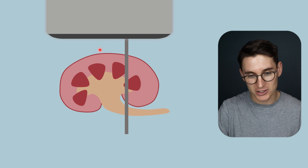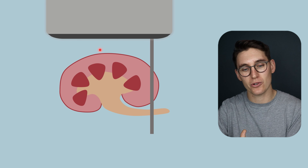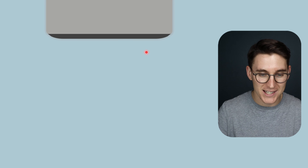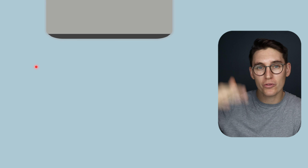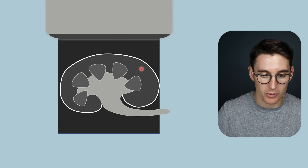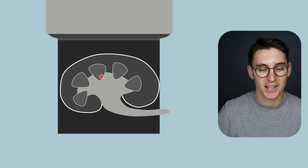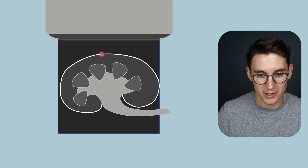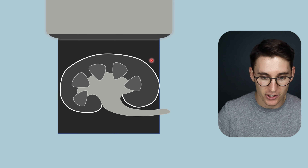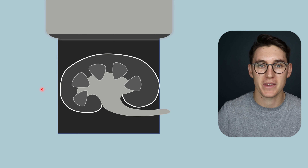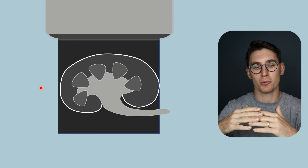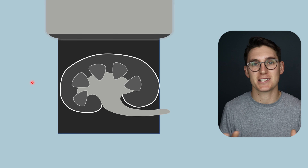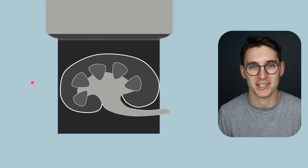The ultrasound machine continues to scan all the way through this piece of anatomy until it has scanned the entire field of view. Once it's scanned that field of view it can compute all of those echo values and plot them as grayscale values on our machine. Tissue boundaries that have high differences in acoustic impedance will appear bright on our image. The echoes represent the tissue boundaries, and the grayscale within the tissues is what's known as the echogenicity of that tissue.